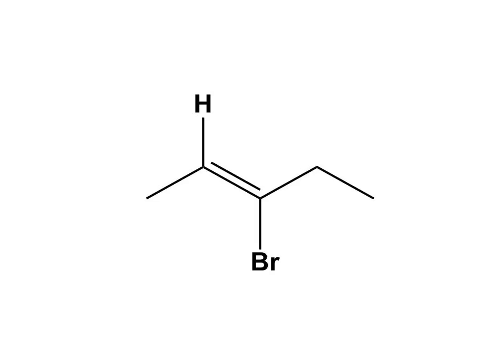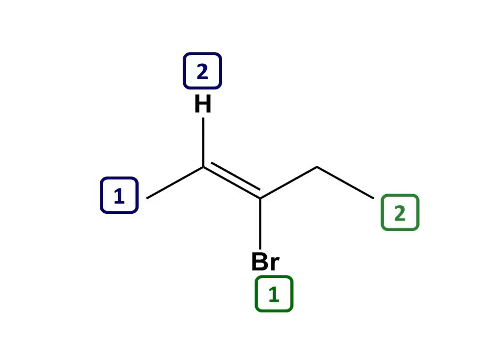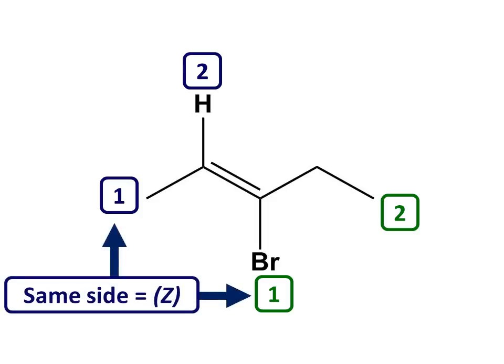One last thing before we go: note that we use these same priority rules when assigning stereochemistry to carbon-carbon double bonds. In this situation, first rank the priority of the two groups attached to each end of the alkene. At the left-hand carbon, methyl is higher priority than hydrogen. At the right-hand carbon, it's bromine that is top, followed by ethyl. If the two higher priority groups are on the same side of the carbon-carbon double bond, as in this example, we have the Z stereoisomer. You can remember that Z equates to 'Zazamezide', although it derives from the German 'Zuzamen'.